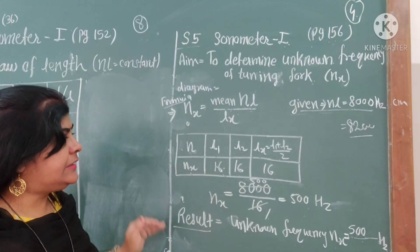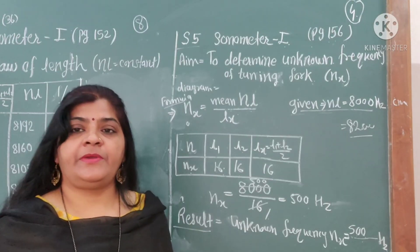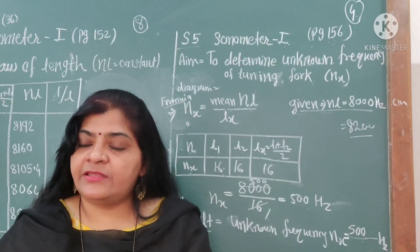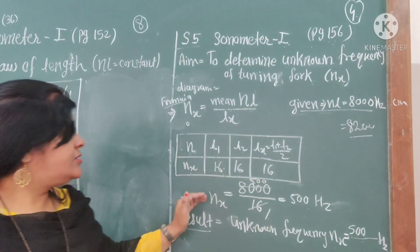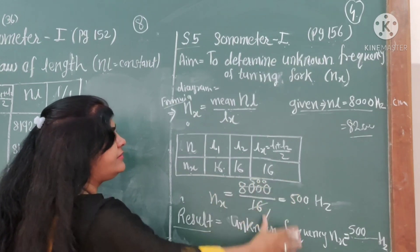In this way, complete the observation table for Sonometer 1 experiment. Here you only have to check with one tuning fork, check the vibrating length, and write it. You may also note down the reading two times.